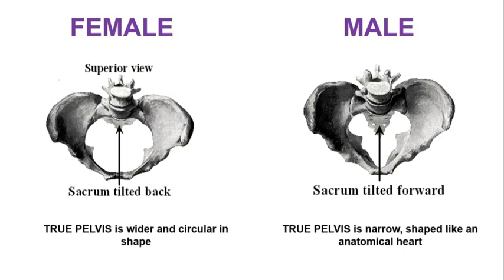In the female pelvis, the true pelvis is wider and more circular in shape, and the sacrum tends to be tilted more posteriorly, allowing a much greater area in the center of the pelvis. In the male pelvis, the sacrum tends to be tilted forward, and the true pelvis — the opening between the pelvic bones — is much more narrow, less oval or circular in shape, and instead more shaped like an anatomical heart.